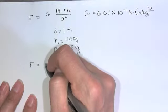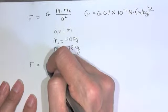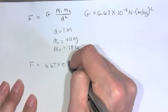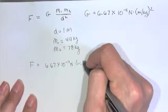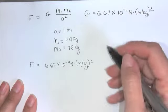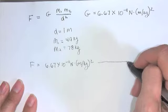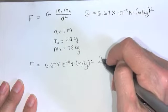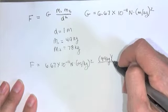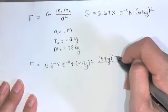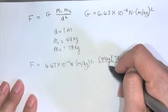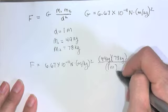F is equal to G is 6.67 times 10 to the minus 11 newtons meters kilogram. And we're going to multiply that times mass 1, 49 kilograms, times mass 2, 78 kilograms, and d squared. So it's 1 meter squared.